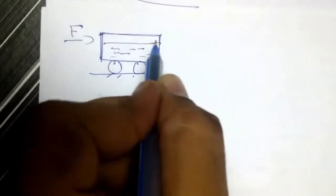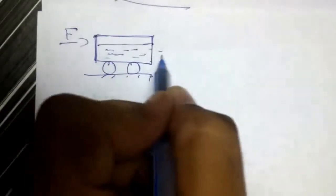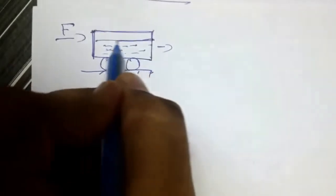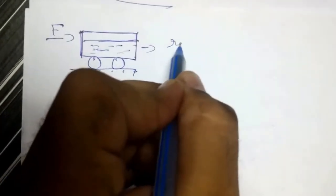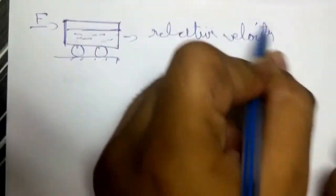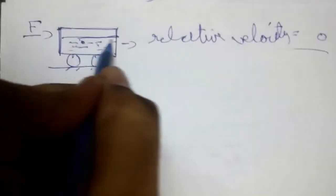So it will be accelerating in its motion. Now due to this acceleration, the relative velocity between each particle will not be zero. Between any two different particles, it will not be zero for the water particles.